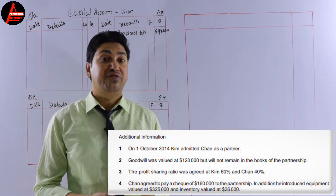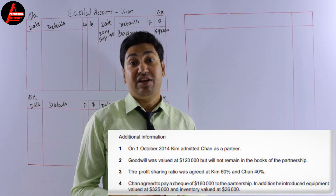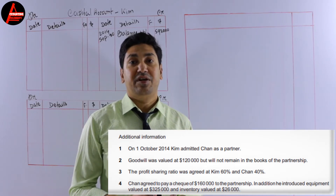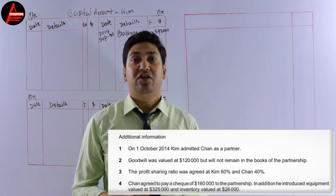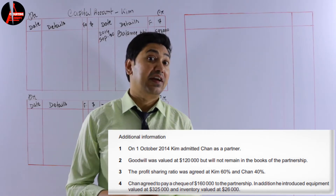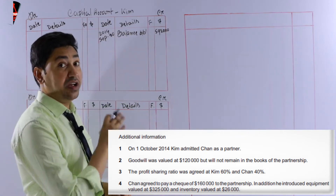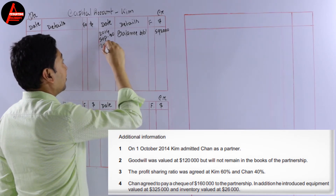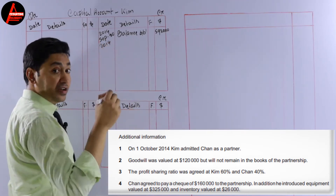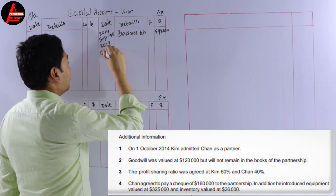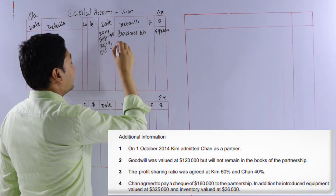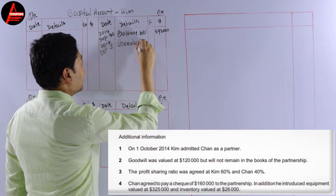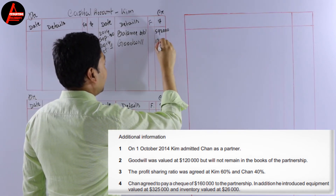Now look at adjustment number two: goodwill was valued at 120,000 dollars but will not remain in the books of the partnership. This value of goodwill will increase Kim's capital, so it will come on the credit side. The date is 1 October 2014, and we write 'Goodwill — 120,000 dollars.'